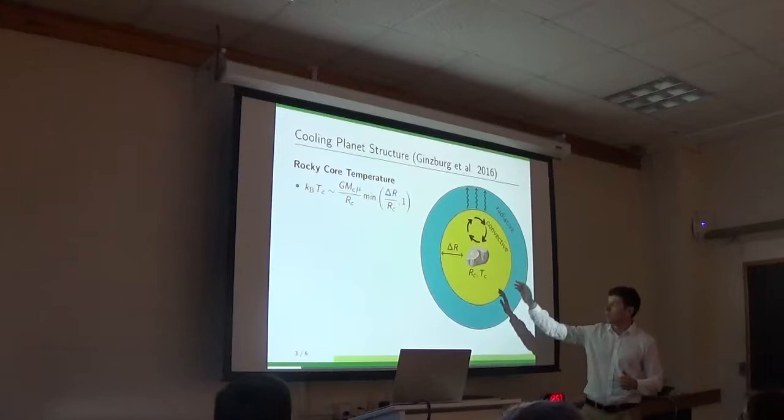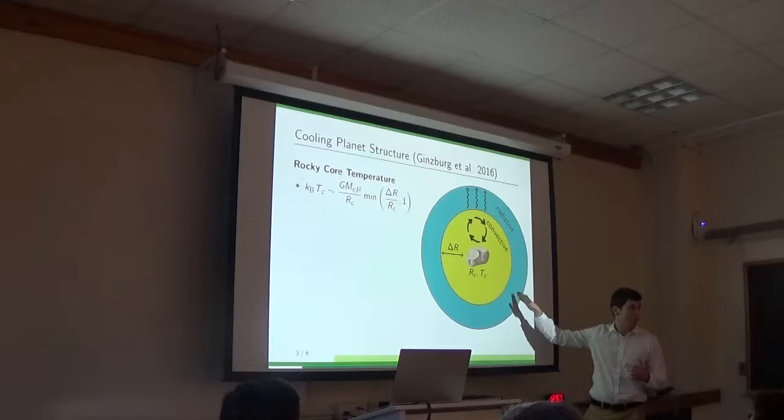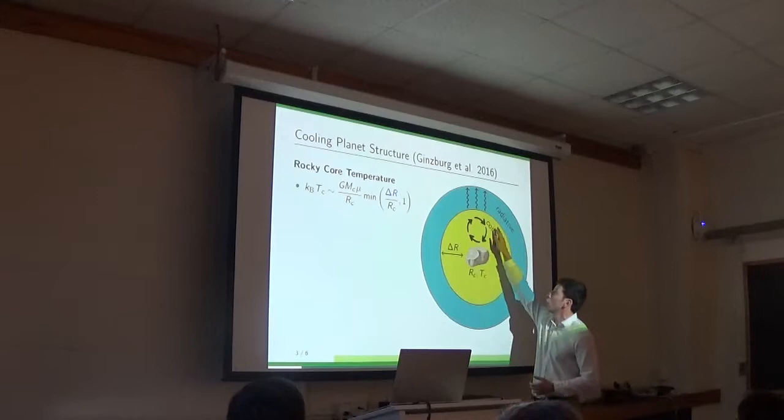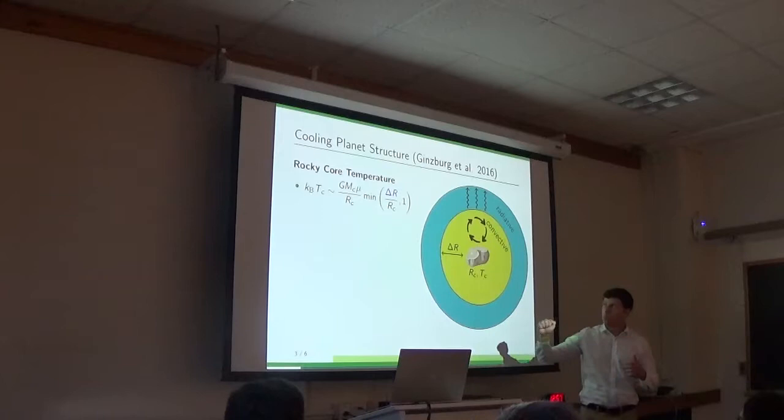So here we have a schematic plot of a planet. Here we have a rocky core with radius rc. And on top we have the gas atmosphere. So most of the atmosphere is convective, but on top it has this radiative outer envelope. And this serves as a bottleneck or as a lid that determines the cooling rate. So in such a structure, you can use the hydrostatic equilibrium equation and calculate the temperature profile all the way down the atmosphere until you get the temperature at the bottom of the atmosphere. And this is also the temperature of the rocky core.